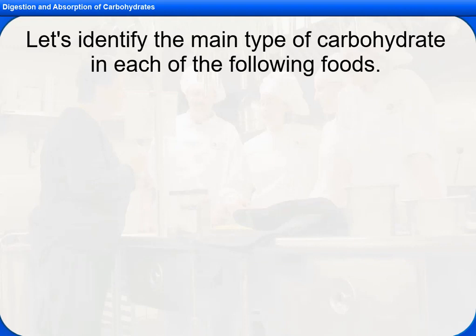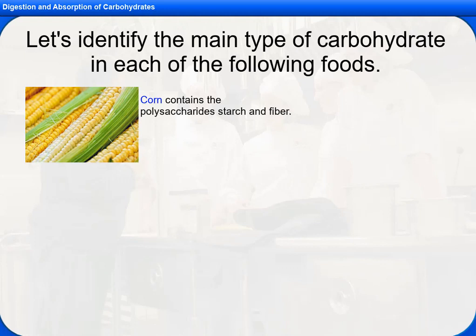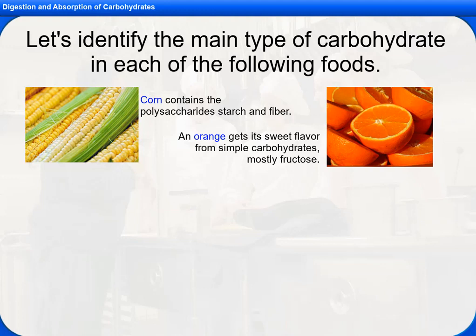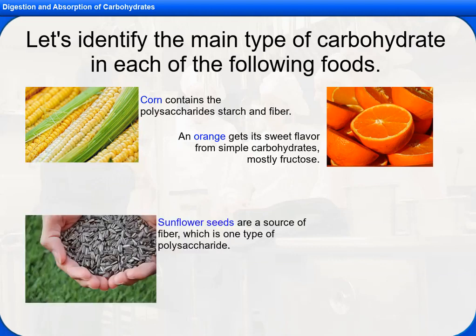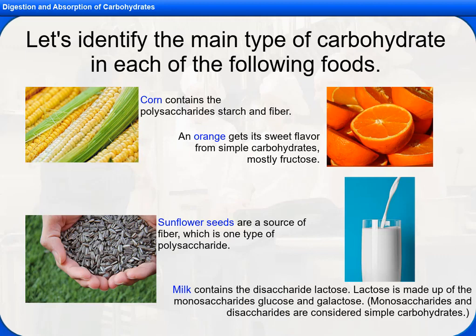Let's identify the main type of carbohydrate in each of the following foods. Corn contains the polysaccharide starch and fiber. An orange gets its sweet flavor from simple carbohydrates, mostly fructose. Sunflower seeds are a source of fiber, which is one type of polysaccharide. Milk contains the disaccharide lactose, which is made up of the monosaccharides glucose and galactose. Monosaccharides and disaccharides are considered simple carbohydrates.